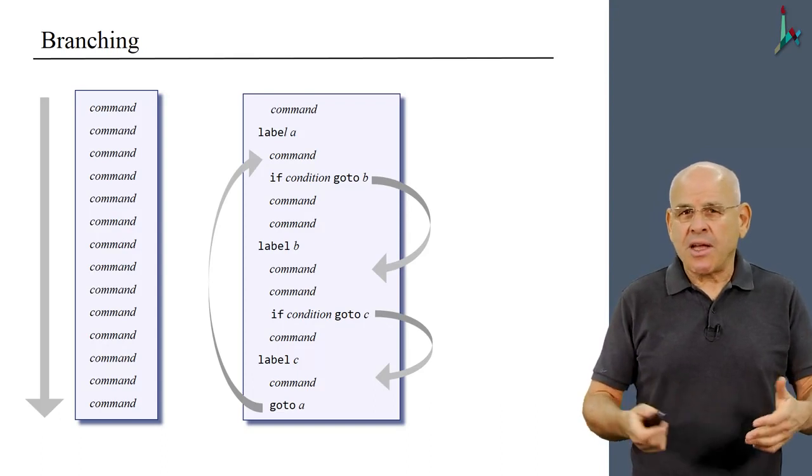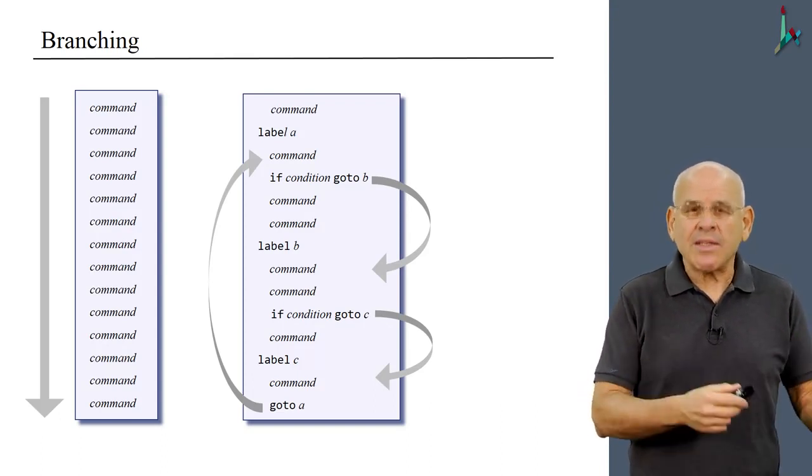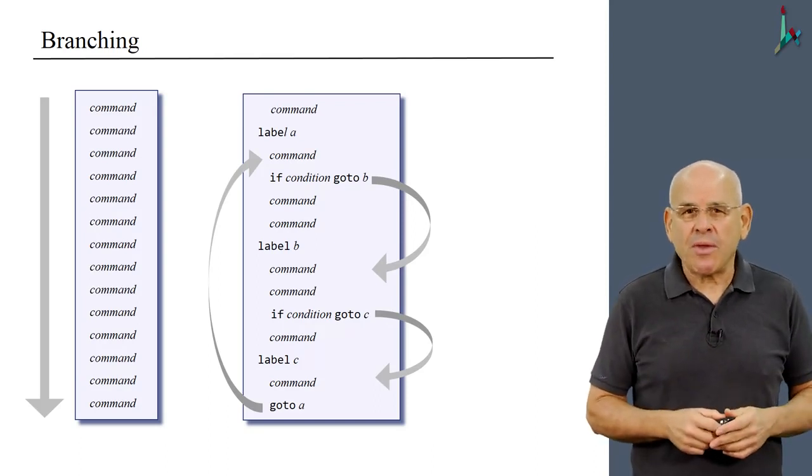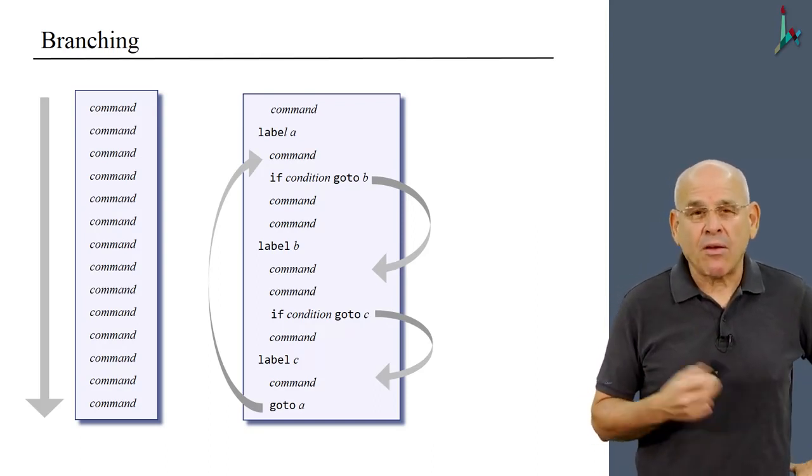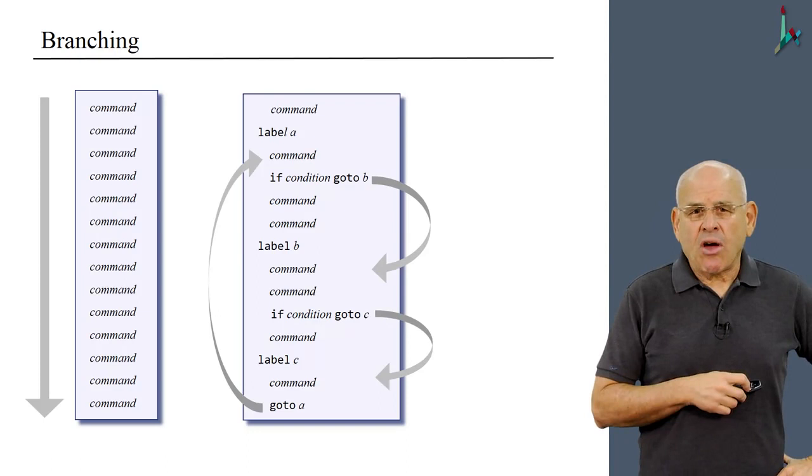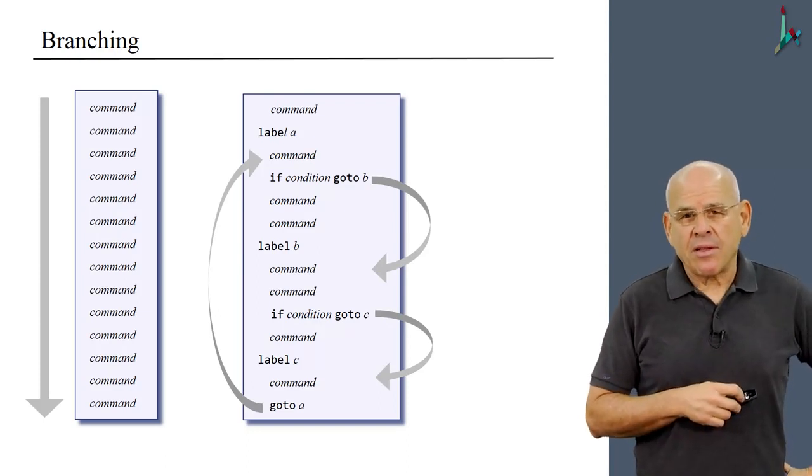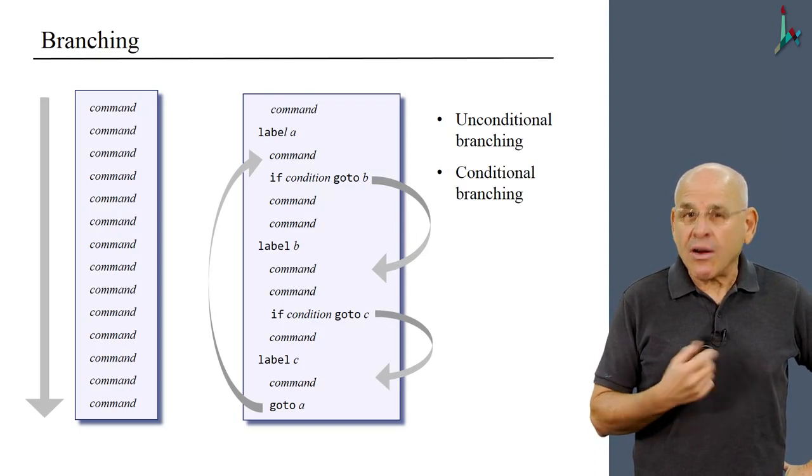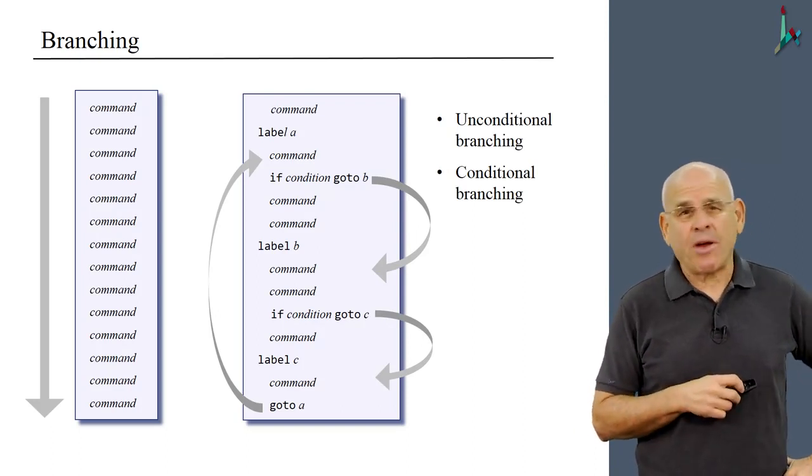Without maybe calling it, without using the word branching. At the low level, we have two kinds of branching. We have what we call unconditional branching and conditional branching. We'll spend a few minutes talking about each one of these flavors of branching.